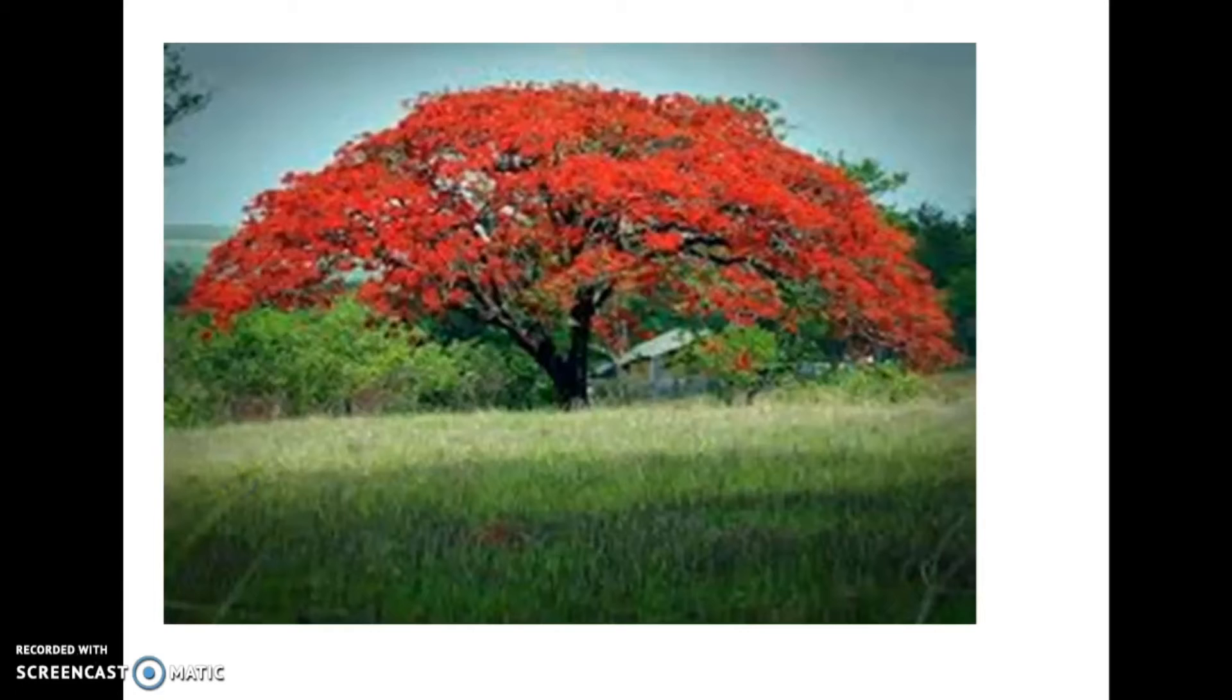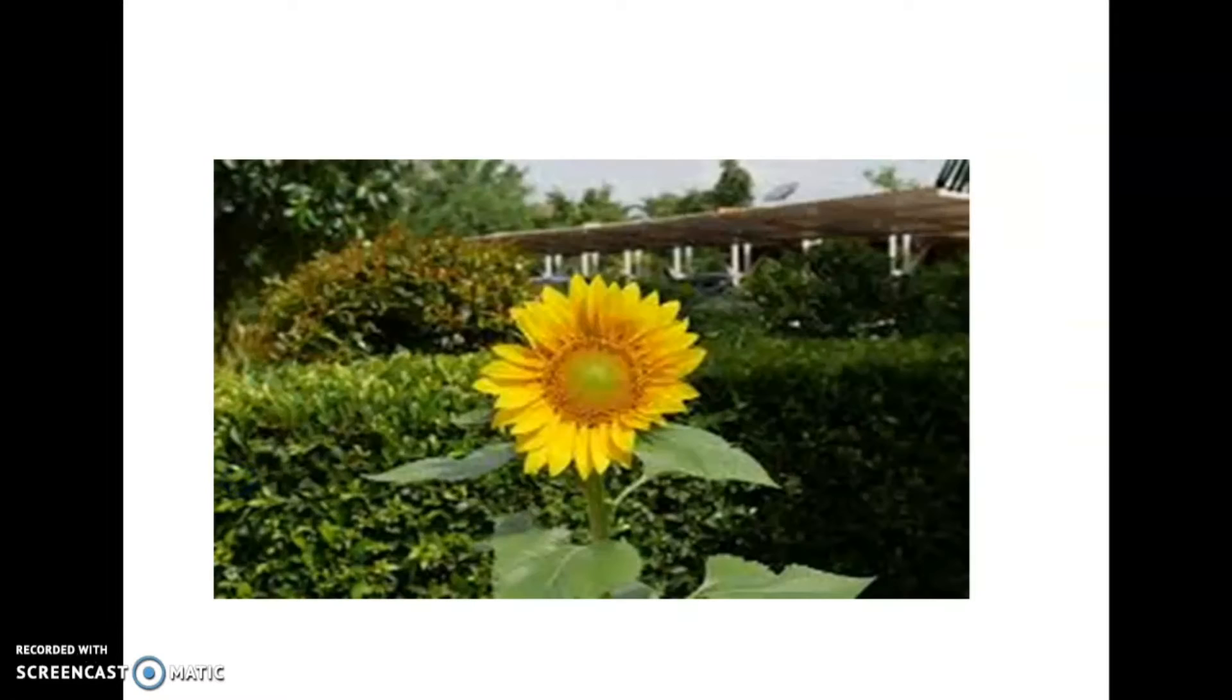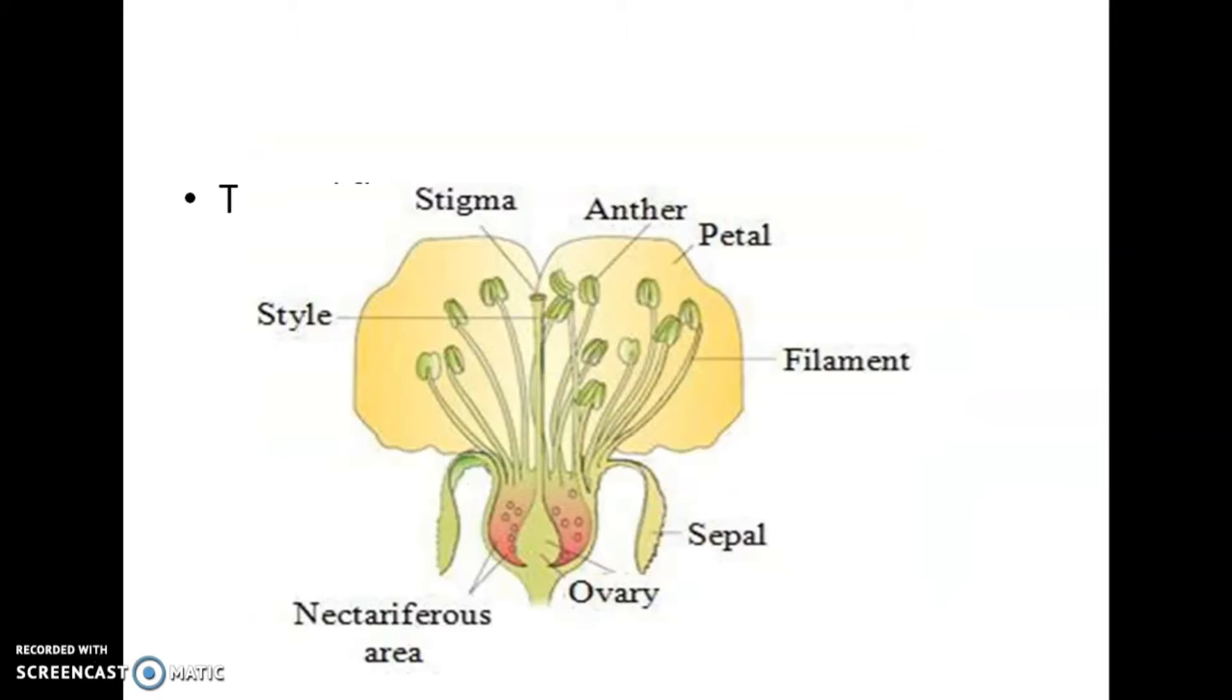The floral primordium and the inflorescences are formed which bear the floral buds and then the flowers. In the flower, the male and female reproductive structures, the androecium and the gynoecium, differentiate and develop. So I will show you a diagrammatic representation of a typical flower.